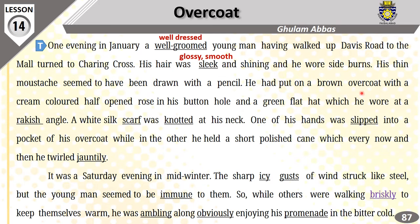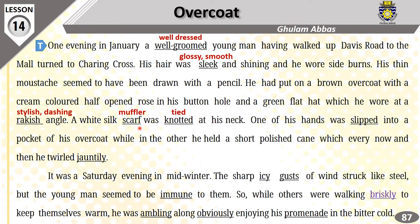He was wearing a brown overcoat with a cream-colored half-opened rose in his buttonhole. A green flat hat which he wore at a rakish angle — rakish means stylish, dashing. A white silk scarf — scarf means muffler — was knotted, meaning tied, at his neck. One of his hands was slipped into a pocket of his overcoat, while in the other he held a short polished cane.